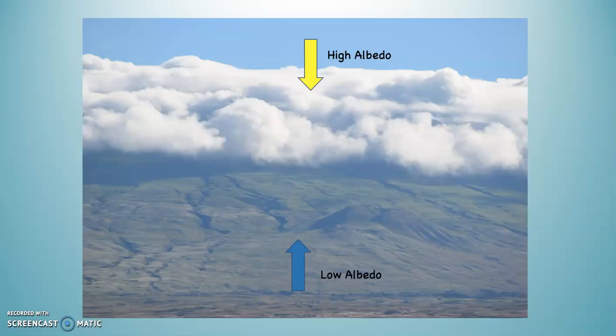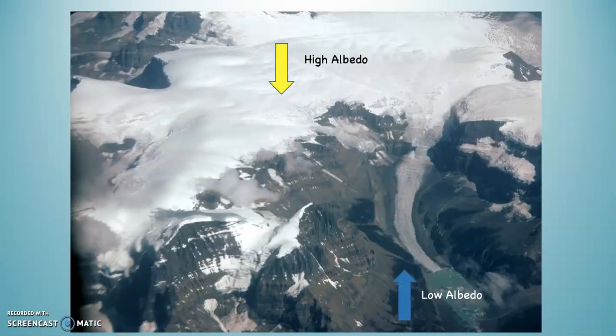Let's take a couple of looks. In this picture you can see clouds — high albedo. The landscape down below, which is mostly dark green — low albedo. So the clouds are reflecting the light, and that land is absorbing it. What about this? The snow, that glacier — high albedo. And you can see that forest down toward the bottom — that's going to be low albedo.